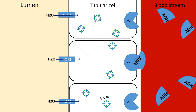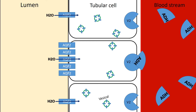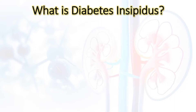So the water moves through these water channels, and the water permeability of the collecting ducts of the kidneys is now increased. The word 'diabetes' means passing more urine, and 'insipidus' means tasteless — so diabetes insipidus means passing tasteless urine in large amounts.